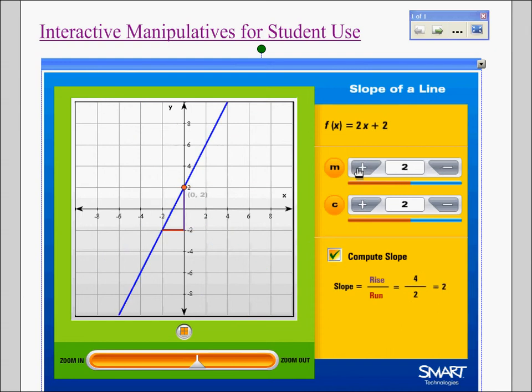We can see how the slope changes as we change things, or we don't. Notice how the slope doesn't change. So the kids can go on and play a little with that.